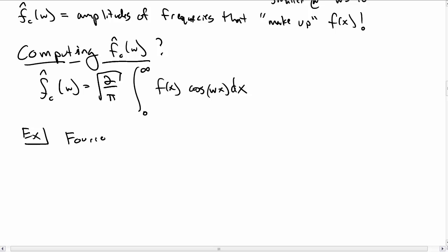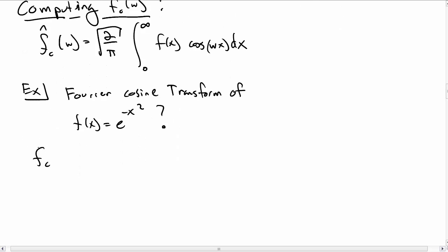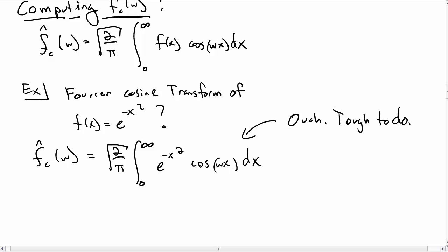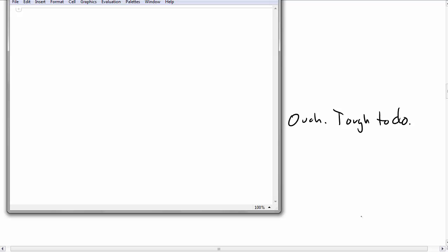As an example, let's compute the cosine Fourier transform of the function we've been talking about, e to the minus x squared. We insert e to the minus x squared in our expression for the Fourier cosine transform above. And then we look at this integral, and we go, ooh, that's not a pretty integral. That's kind of tough to do by hand.